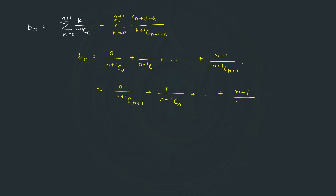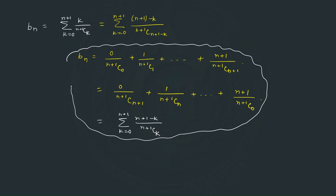This becomes (n+1) divided by (n+1)C0. If we find the general term of this series, it becomes summation of (n+1−k) divided by (n+1)Ck from k equal to 0 to n+1. Since (n+1)C(n+1−k) equals (n+1)Ck, this simplifies further.